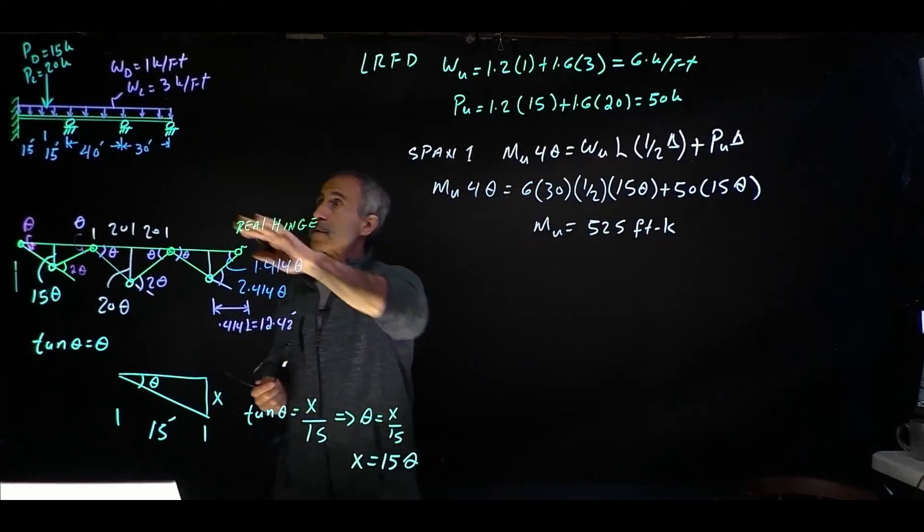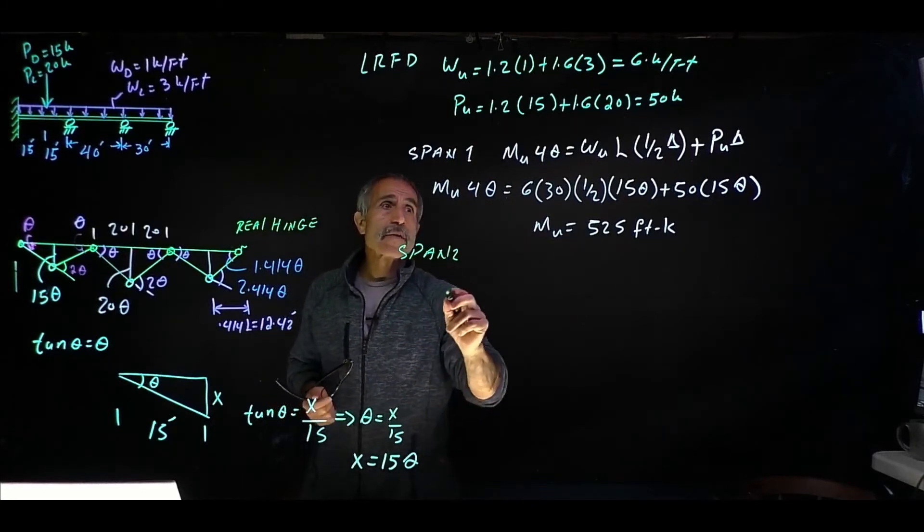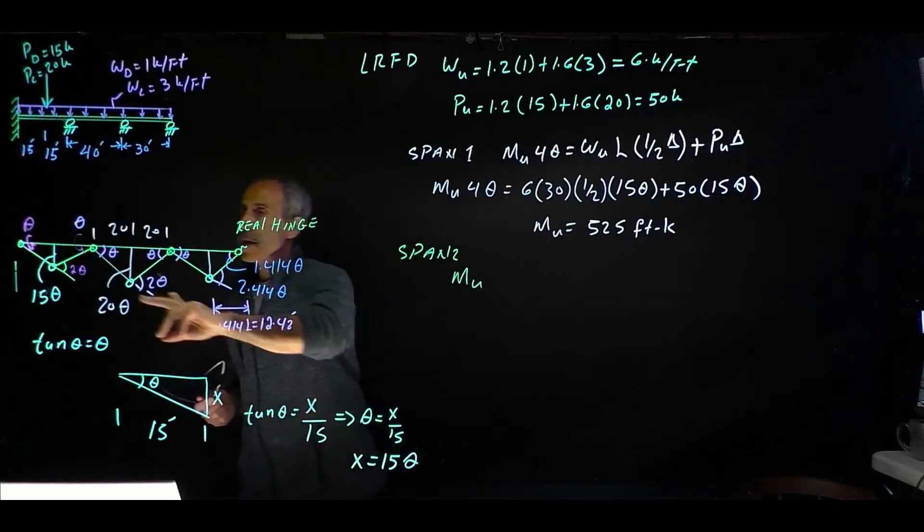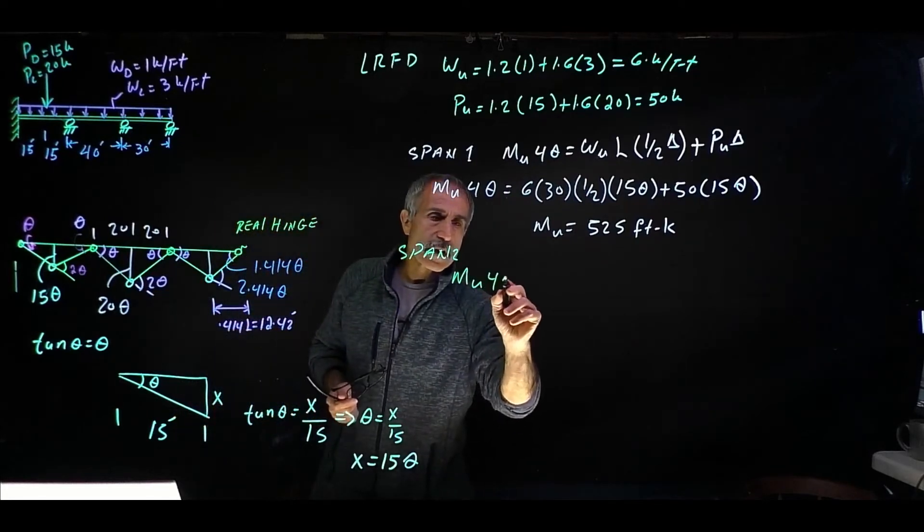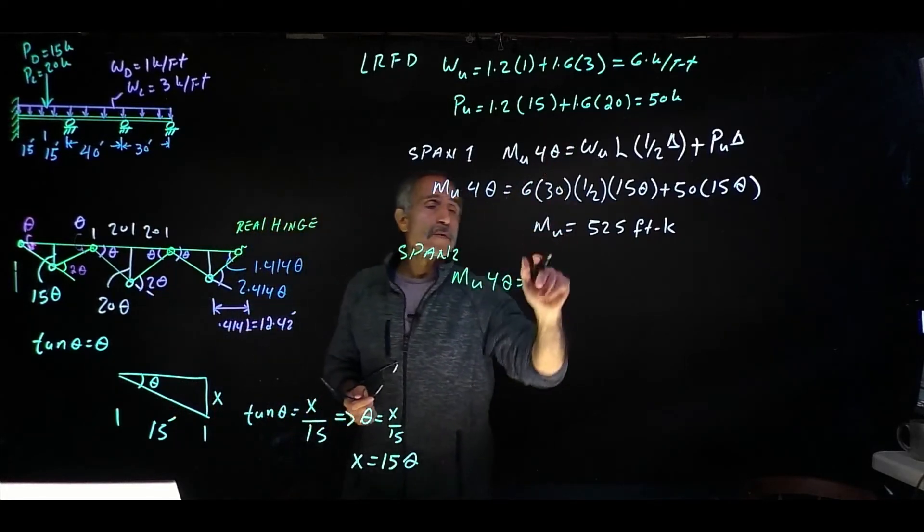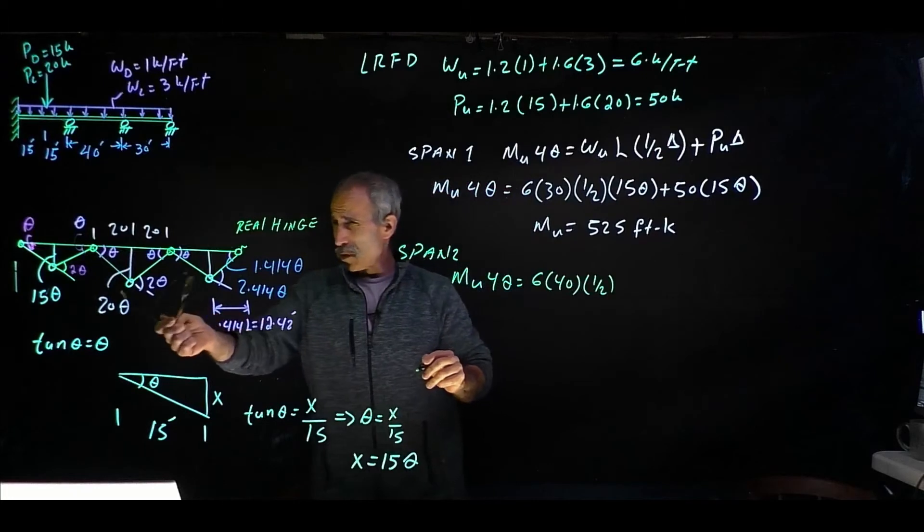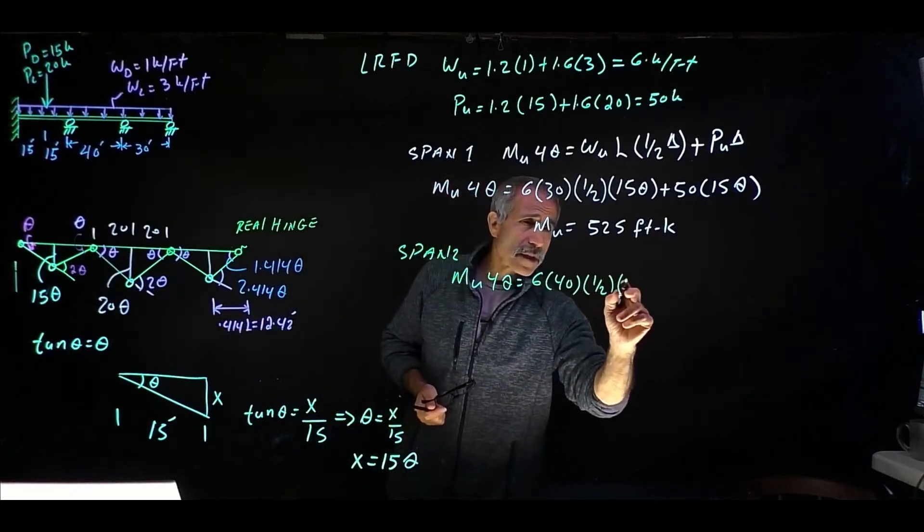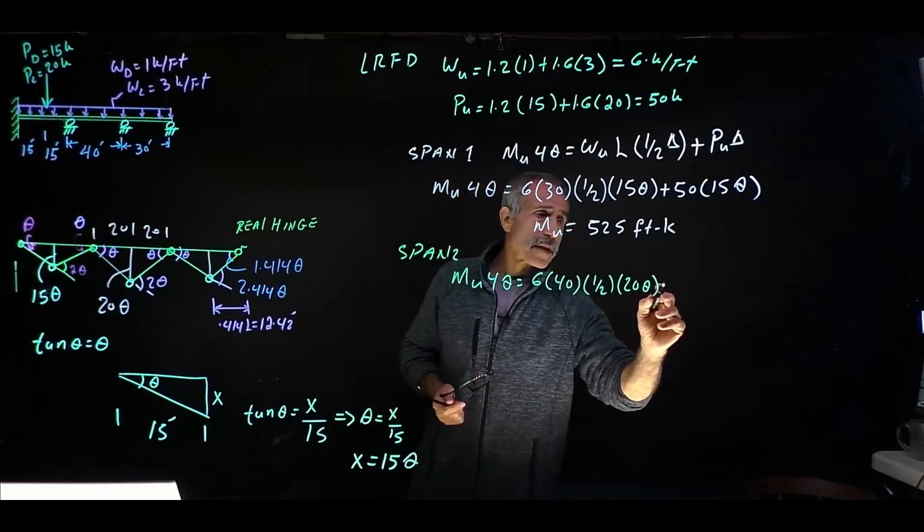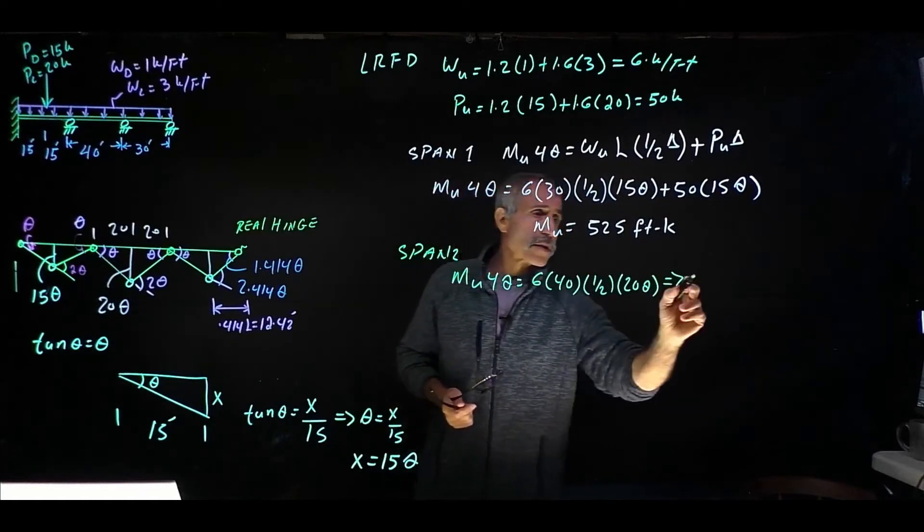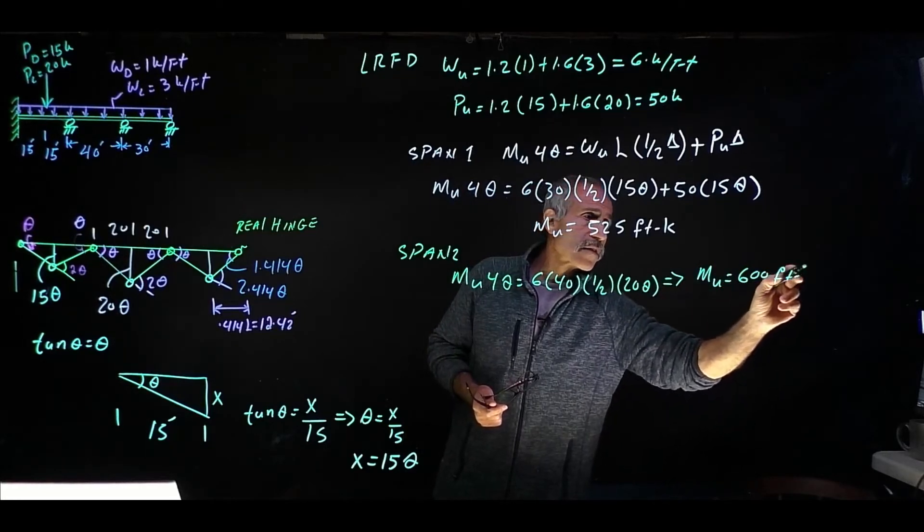We're going to do the same thing for span 2. So span 2, we have MU times 1 theta maker 3 maker 4, times 4 theta is equal WU came out to 6, L this time is 40, times one half, the angle came out to 20 theta. And that's it, so MU is equal 600 foot kip.